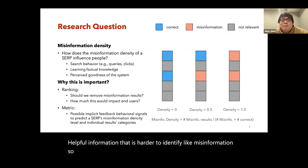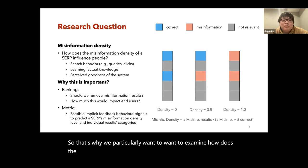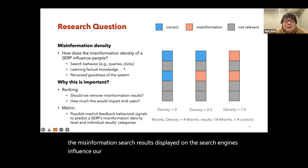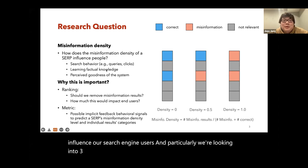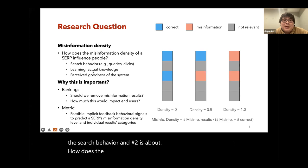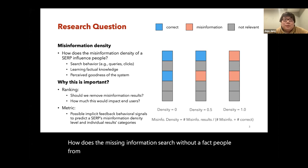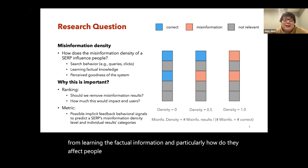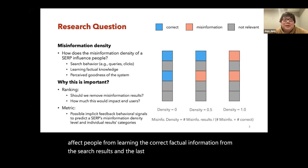That's why we particularly want to examine how misinformation search results displayed on search engines influence search engine users. We're looking at three aspects of their influence: number one is about their search behavior; number two is about how misinformation search results affect people from learning factual information — particularly how they affect people from learning the correct factual information from search results; and the last one is the perceived goodness of the system.